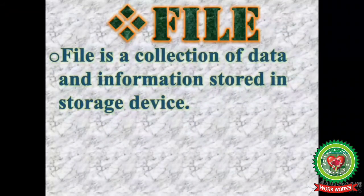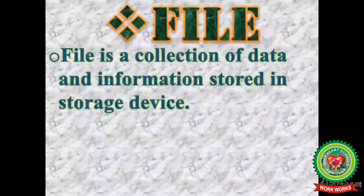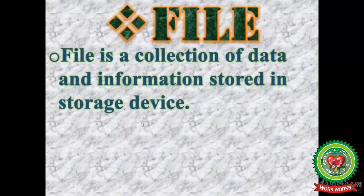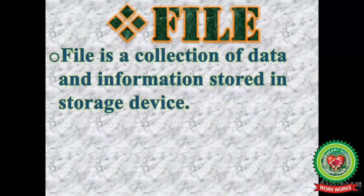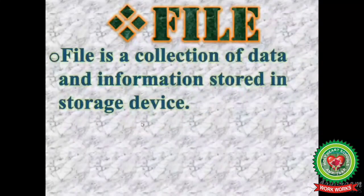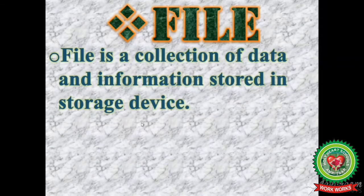A file is a collection of data and information stored in a storage device. Whatever we store or save on the computer is stored in the form of a file. For example, if you made a drawing in Paint, how is it going to be saved? It is stored in the form of a file.